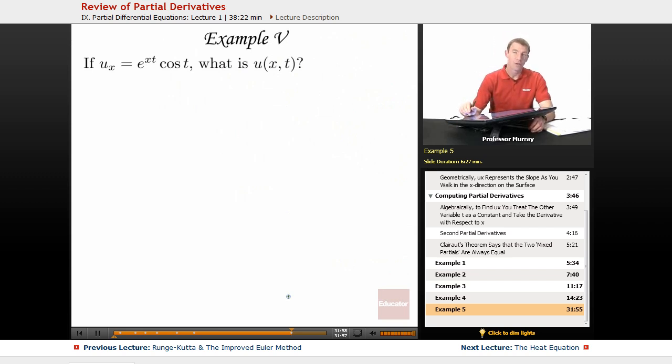In our example 5, we're going the opposite direction from taking partial derivatives. This time we're given a partial derivative, and we're asked to figure out what the original function could be that have produced that.